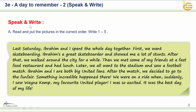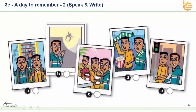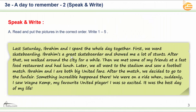Speak and Write. Activity A: Read and put the pictures in the correct order. Write from one to five. We will listen to a small paragraph and after that we will try to put the pictures in the correct order — which one is number one, which is number two, and so on. Let's go back; I want you to listen, then we'll come back together to complete the order.